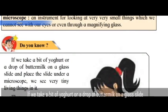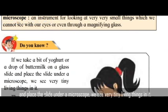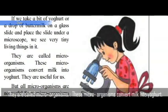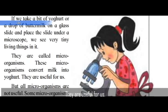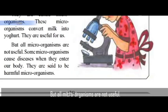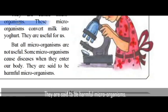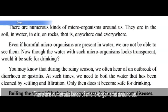If we take a bit of yogurt or a drop of buttermilk on a glass slide and place the slide under a microscope, we see very tiny living things in it — they are called microorganisms. These microorganisms convert milk into yogurt; they are useful for us. But not all microorganisms are useful — some cause diseases when they enter our body. They are called harmful microorganisms.